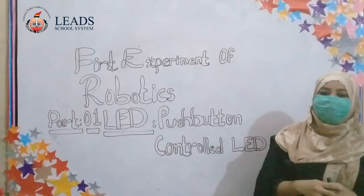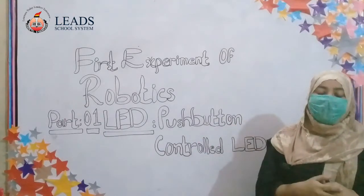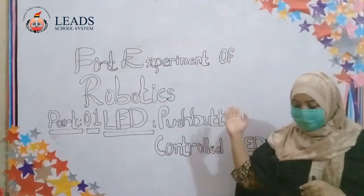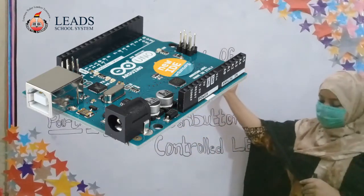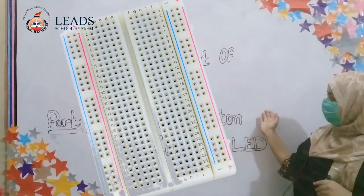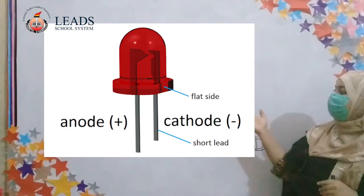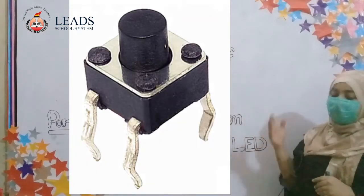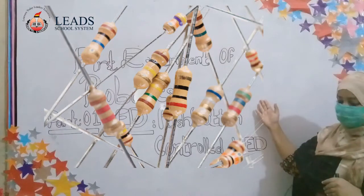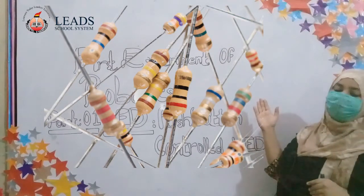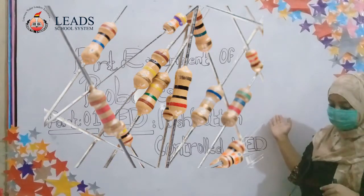In this project we need some components. We need a breadboard, jumper wires, LATs, and a momentary tactile or push button. We are going to use two types of resistors: a 10K ohm resistor and a 220 ohm resistor.